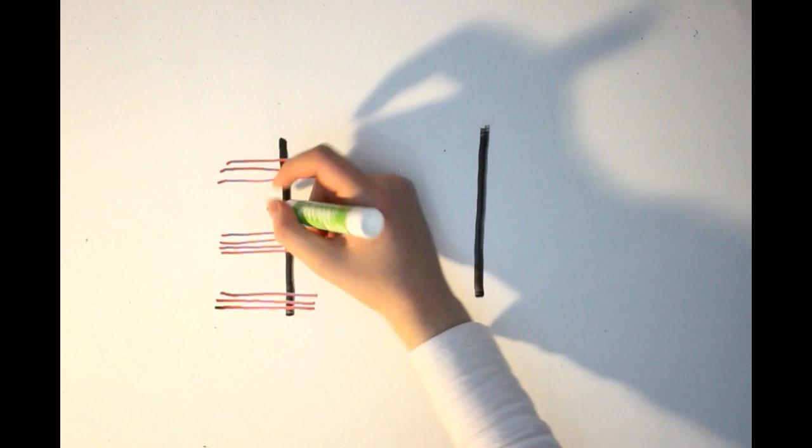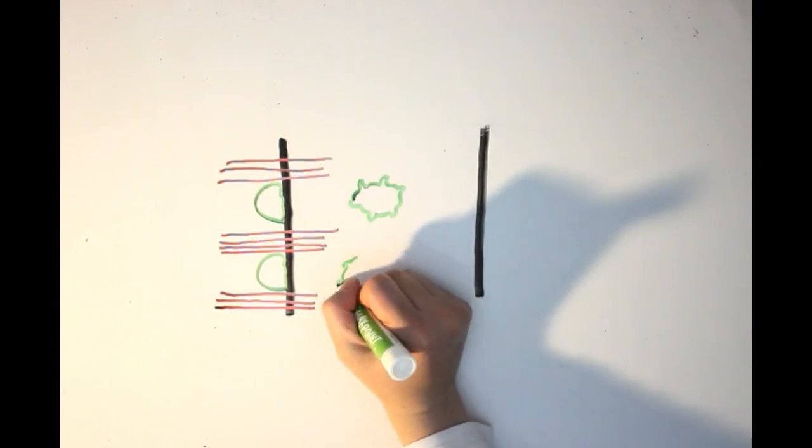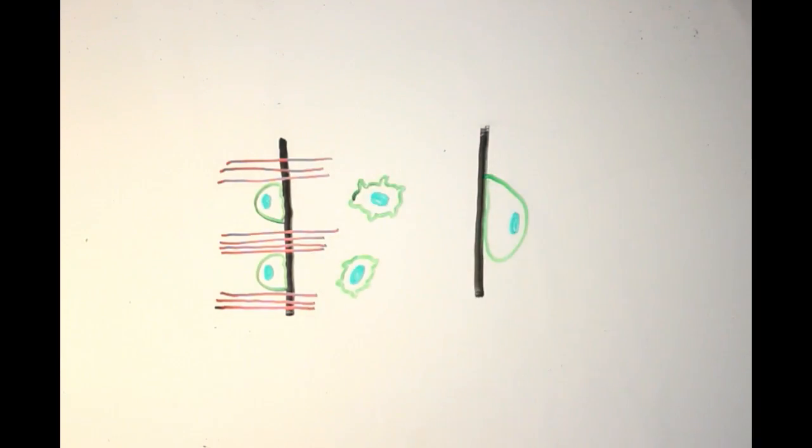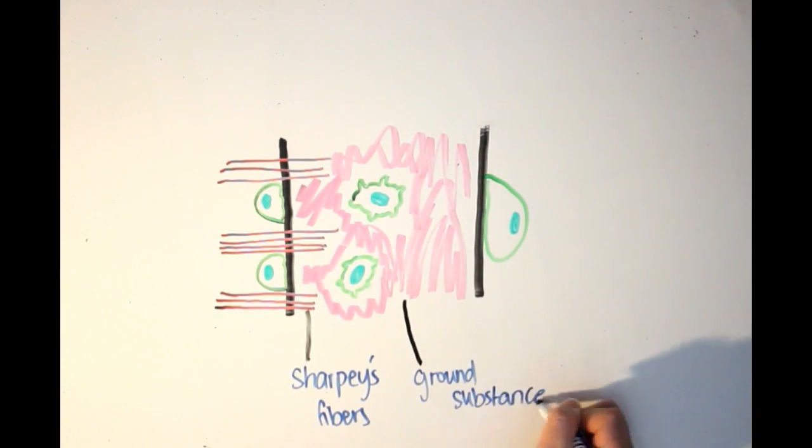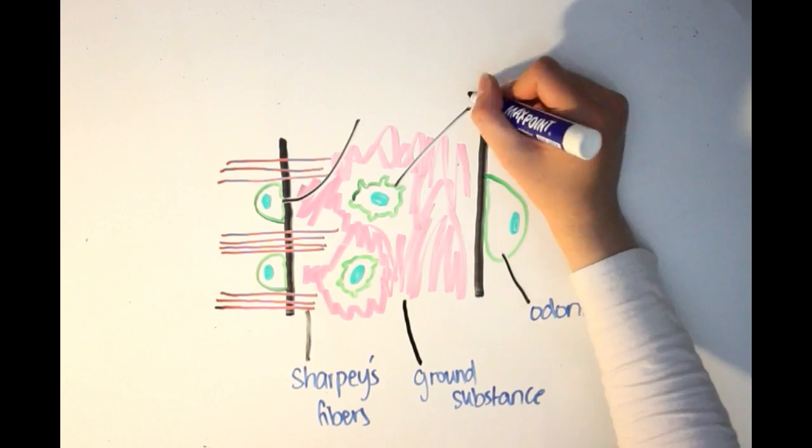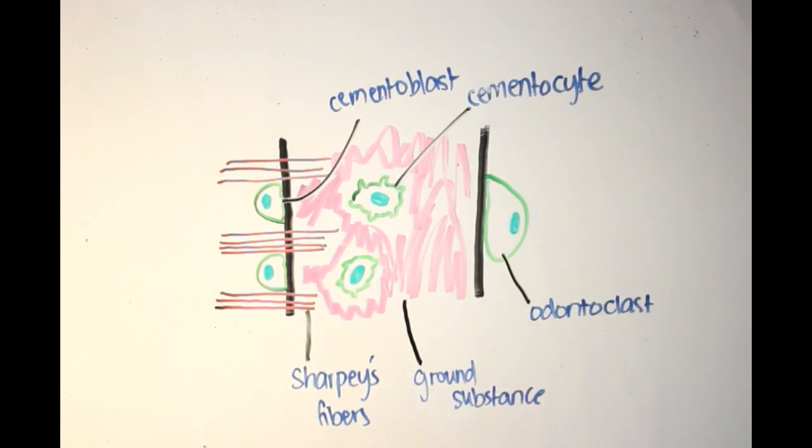So how is cementum organized? Cementum is made of three different cells: cementoblasts, cementocytes, and odontoclasts, and a matrix containing ground substance and fibers.